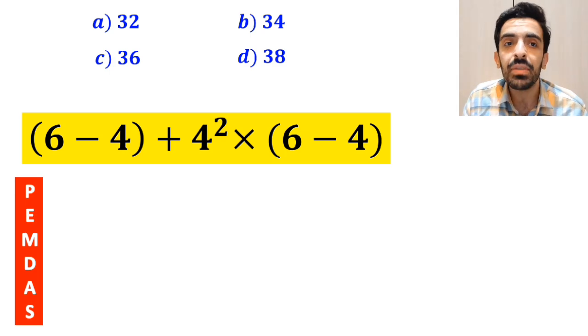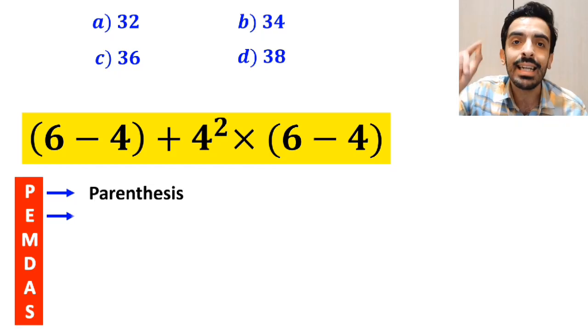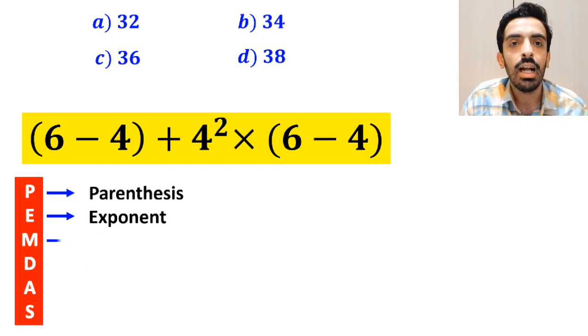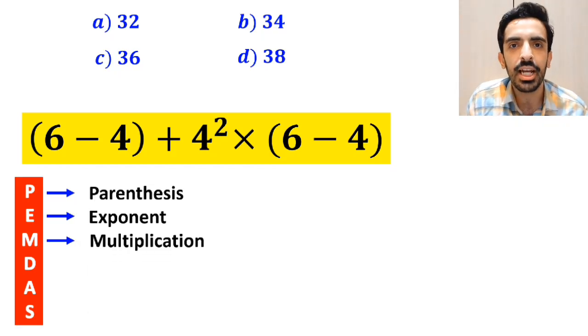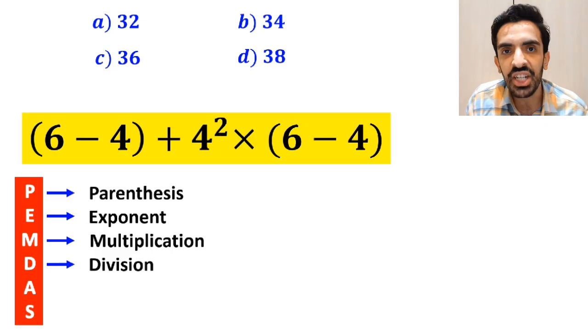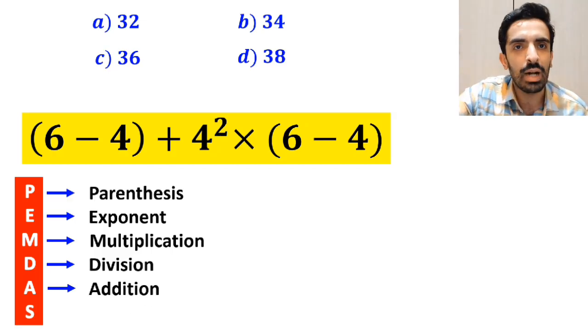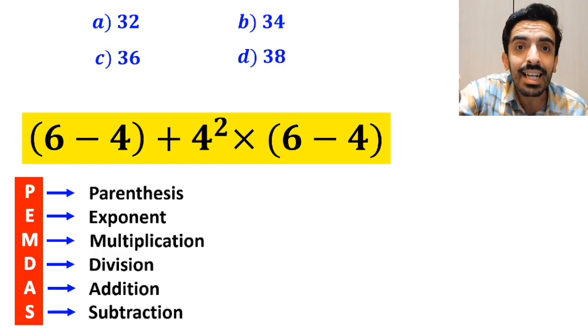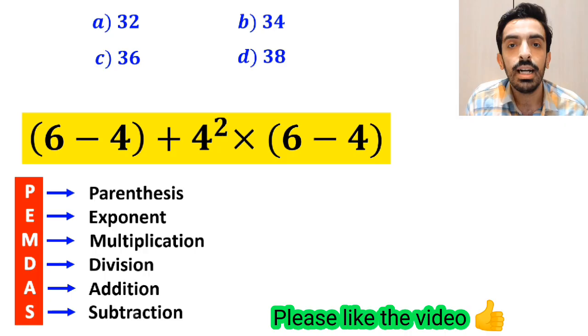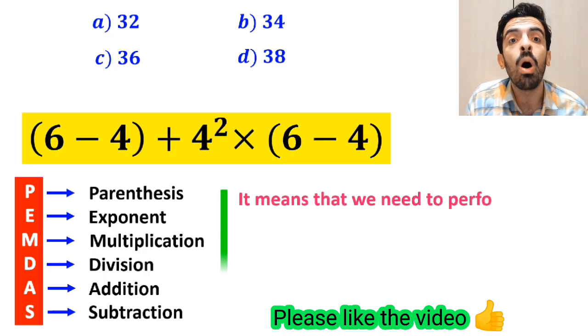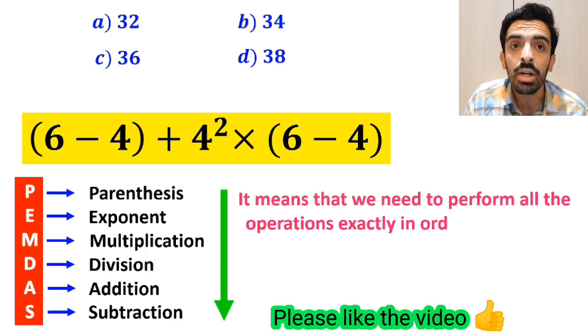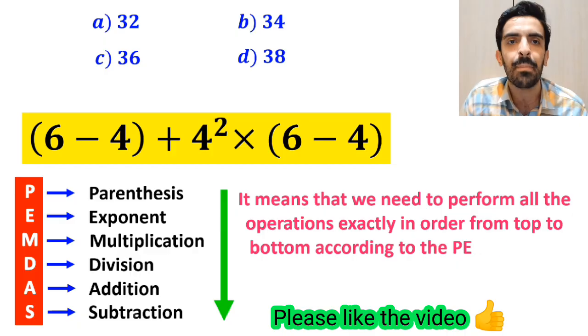And in this rule, P stands for parenthesis, E stands for exponent, M stands for multiplication, D stands for division, A stands for addition, and S stands for subtraction. It means that we need to perform all the operations exactly in order from top to bottom according to the PEMDAS rule.